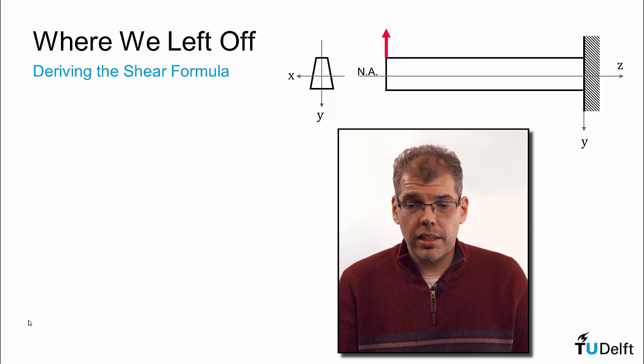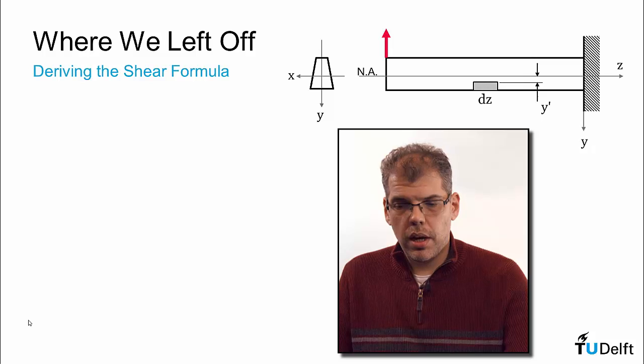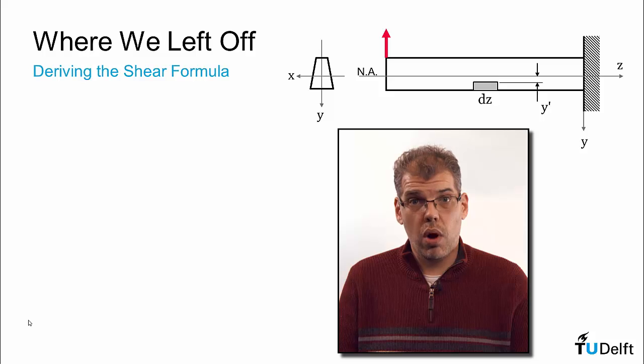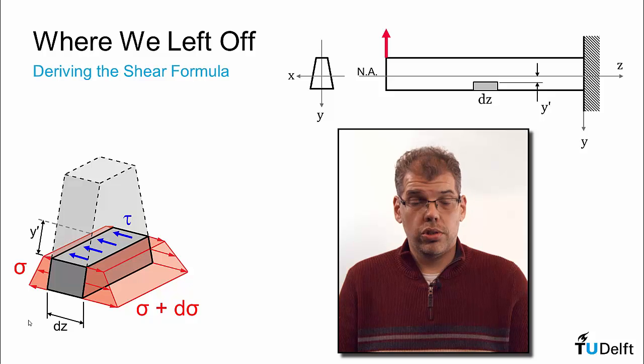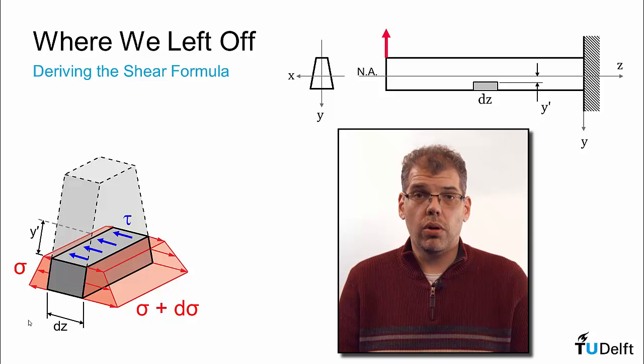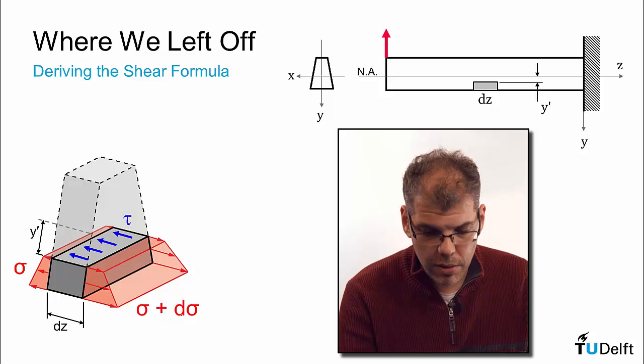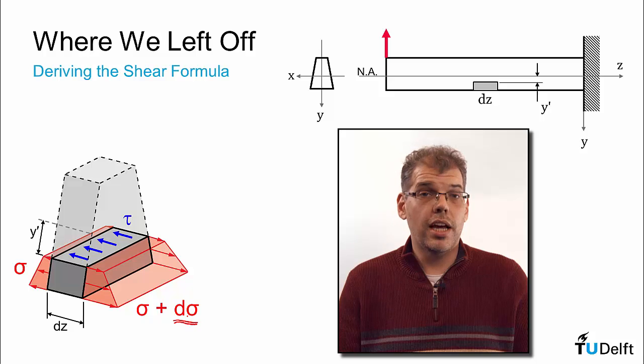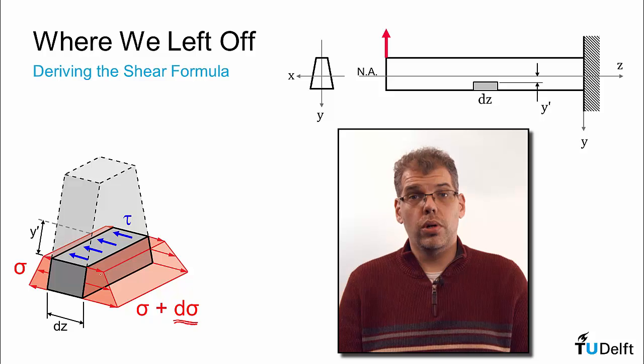We looked at a beam subjected to a transverse shear force, as shown here. We looked at a small section of that beam cut away at a distance y' from the neutral axis, and we saw that a horizontal shear stress needed to form on that section plane in order to balance the resultant from the two normal stress distributions. The key there was that there was this d-sigma, or this variation in that normal stress distribution that causes this shear stress to occur.